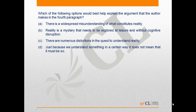Which of the following options would best help explain the argument that the author makes in the fourth paragraph? Let us look at what the fourth paragraph says. It says that people are ignorant of reality and there is a widespread ignorance. We believe and we act as if we understand reality, but what we do not see are the various elements that hinder our understanding of reality and lead us to misunderstand reality.